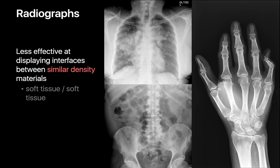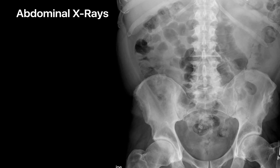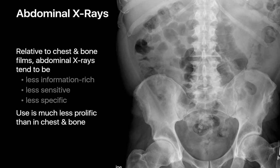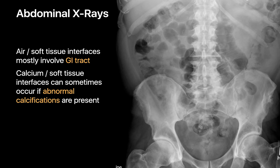Radiographs are less effective for showing interfaces between materials of similar density, like one kind of soft tissue and another. That's why, compared to chest and bone films, abdominal radiographs tend to be less information-rich, less sensitive, and less specific. Nonetheless, the ability to characterize air-soft tissue and calcium-soft tissue interfaces can be useful for appraising the GI tract, which usually contains gas, and for looking for abnormal calcification patterns that may hint at the presence of an acute abdominal disease.